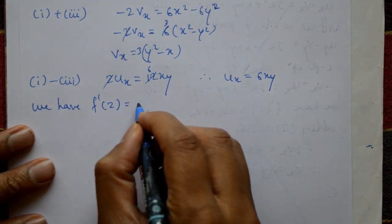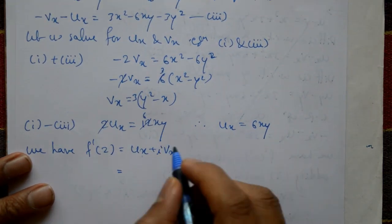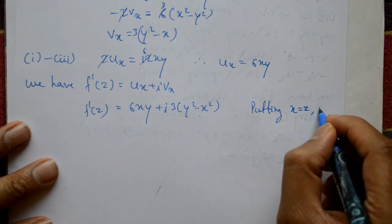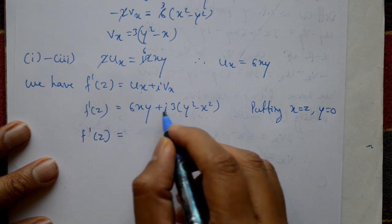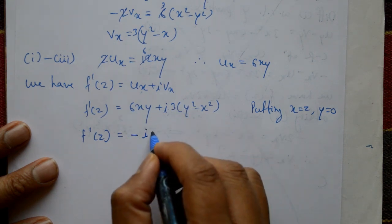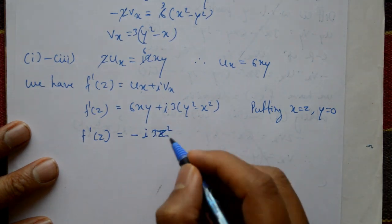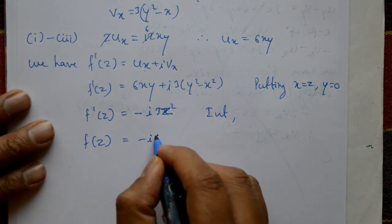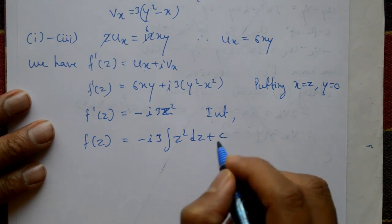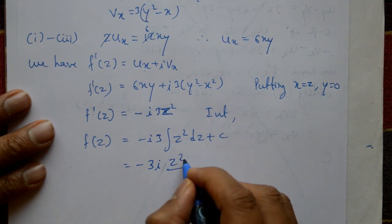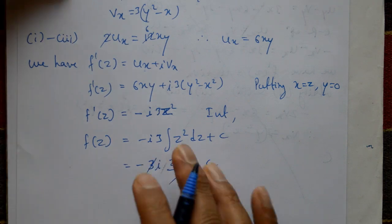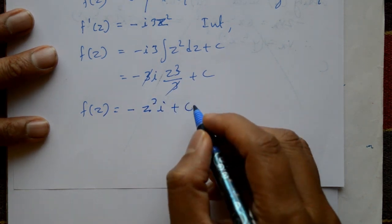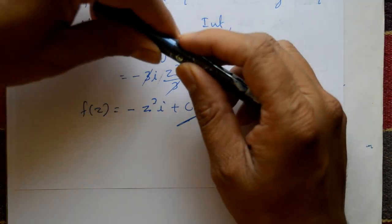Now f'(z) = ∂u/∂x + i·∂v/∂x = 6xy + i·3(y² - x²). Putting x = z and y = 0: f'(z) = -3iz². Integrating with respect to z: f(z) = -3i·z³/3 + c. The threes cancel, giving f(z) = -iz³ + c. This is the required solution.